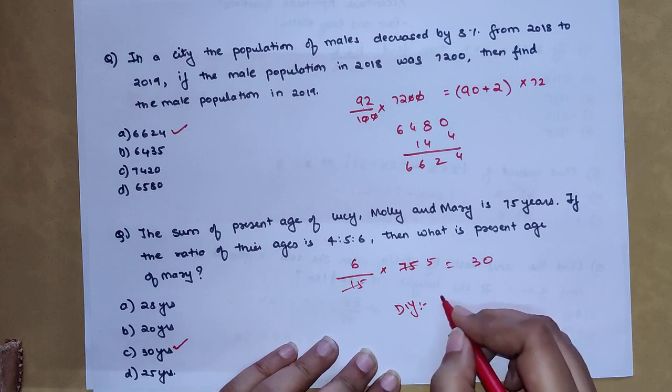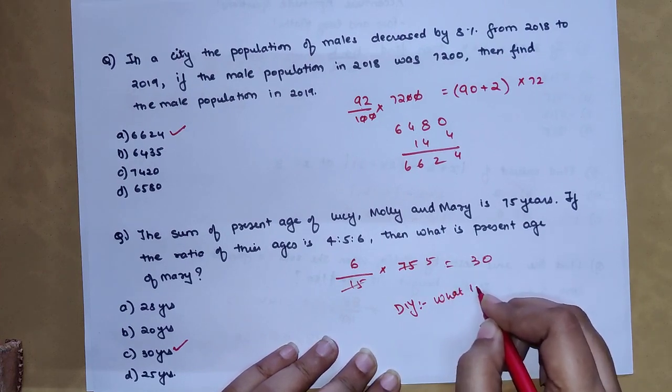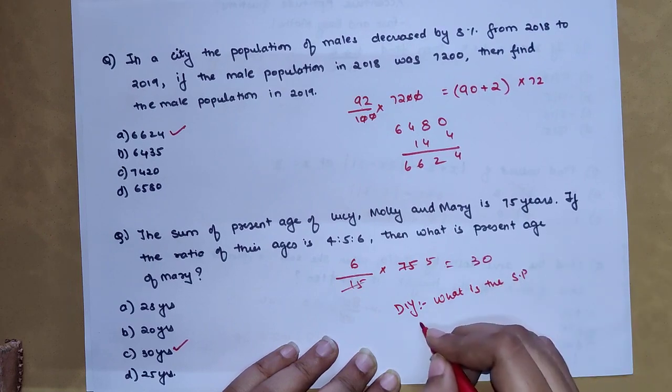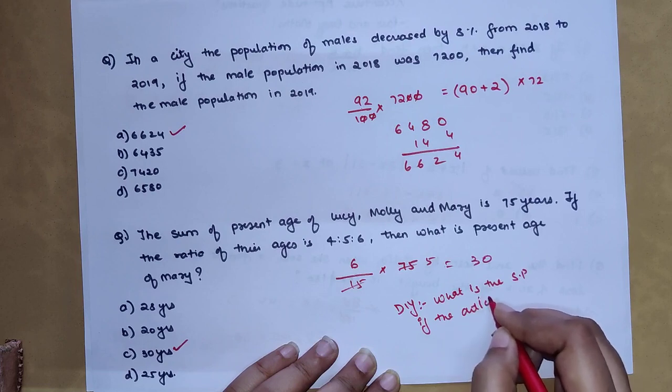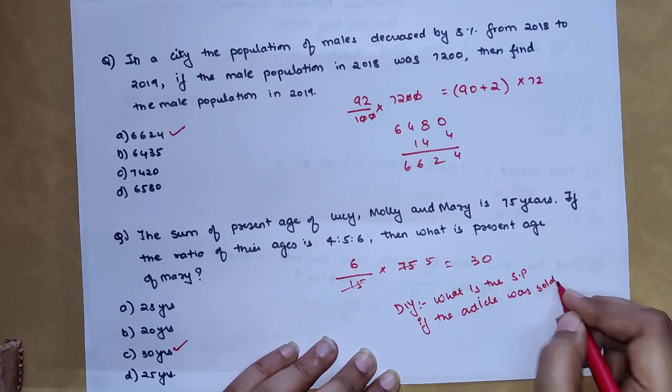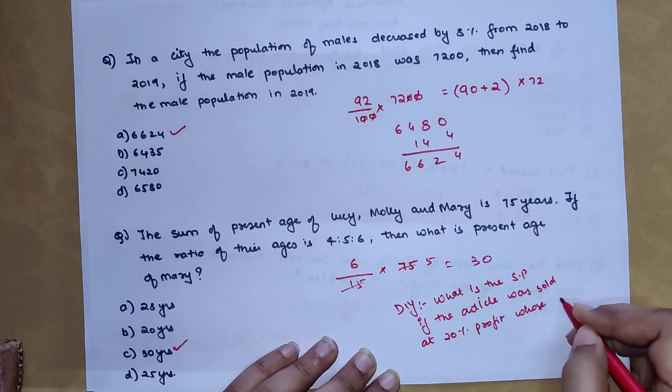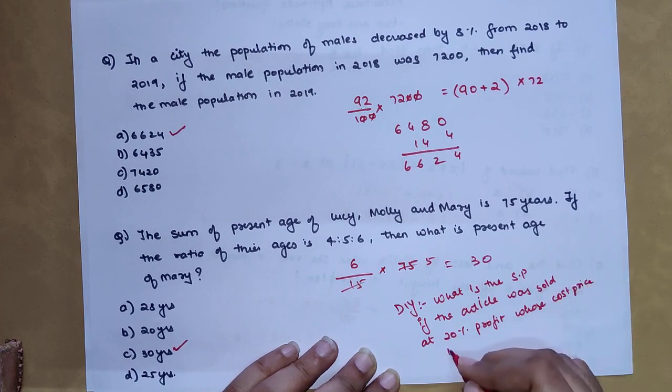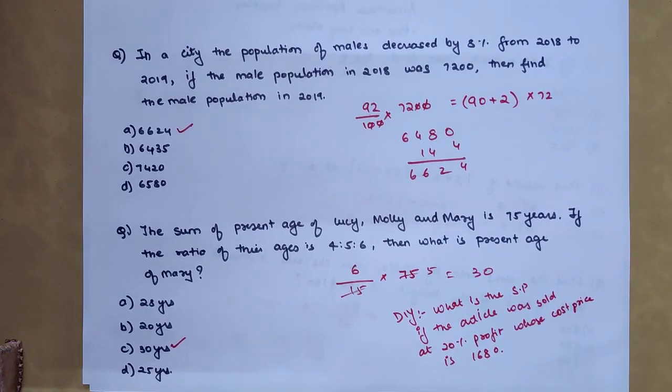You will let me know what is the selling price if the article was sold at 20 percent profit, whose cost price is 1680. So do let me know your answers in the comment section.